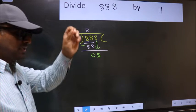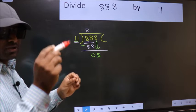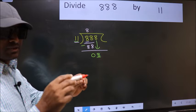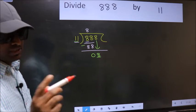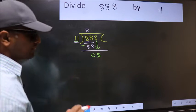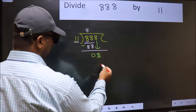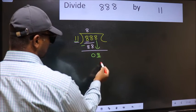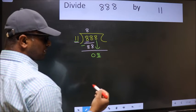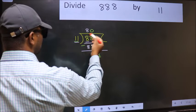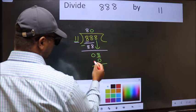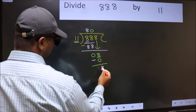Bringing the number down and putting dot/take 0 in the same step — you should not do that. Instead, think: which number should we take here? If I take 1, we get 11, but 11 is larger than 8. So we should take 0: 11 × 0 = 0. Now subtract: 8 minus 0 = 8.